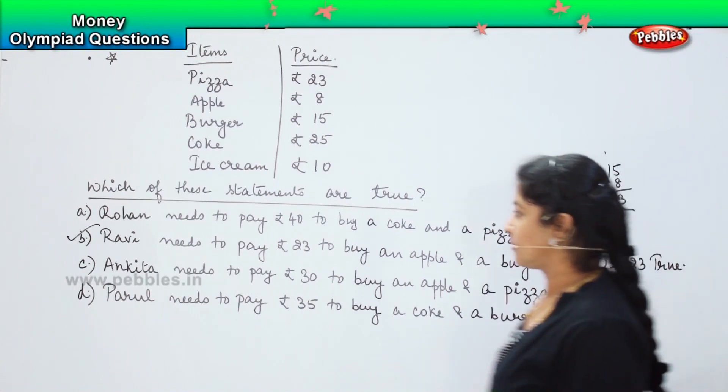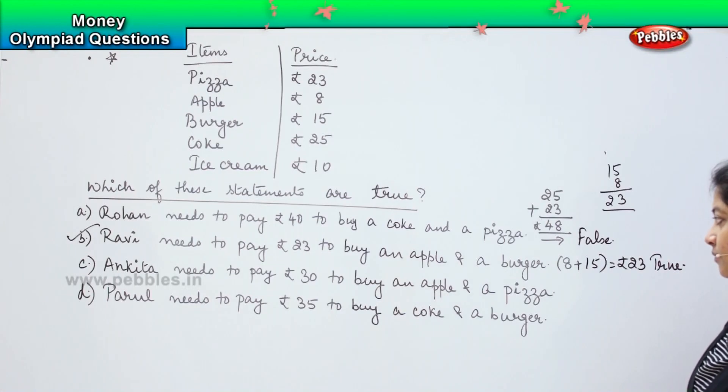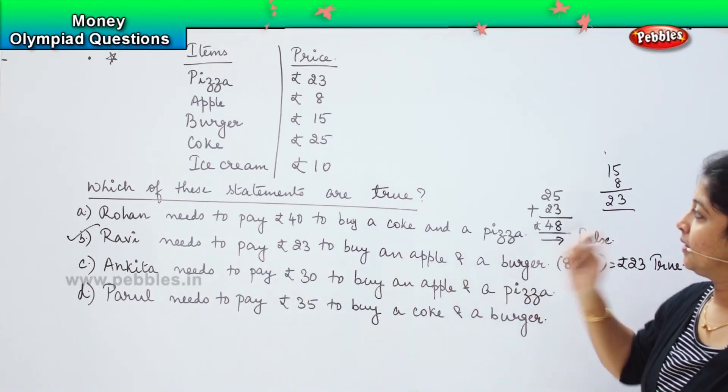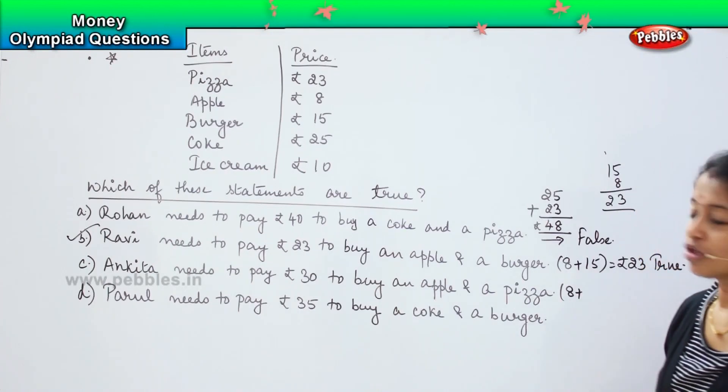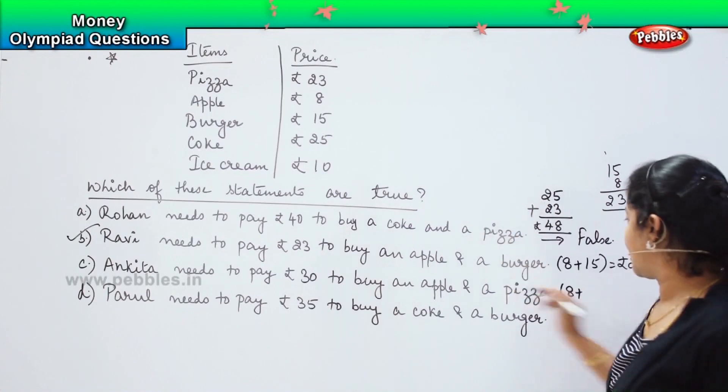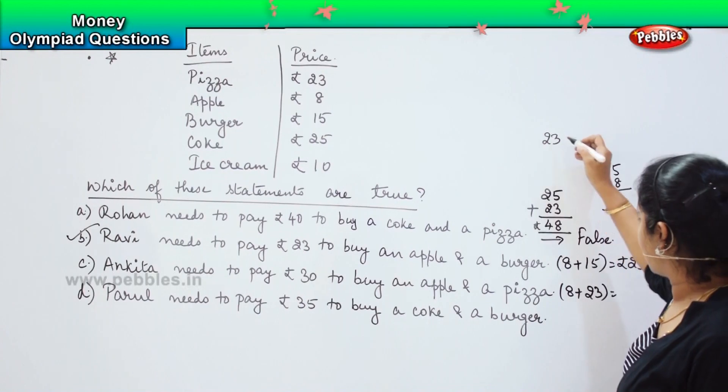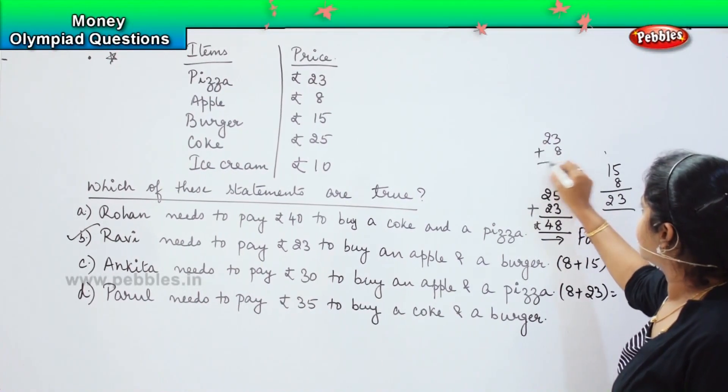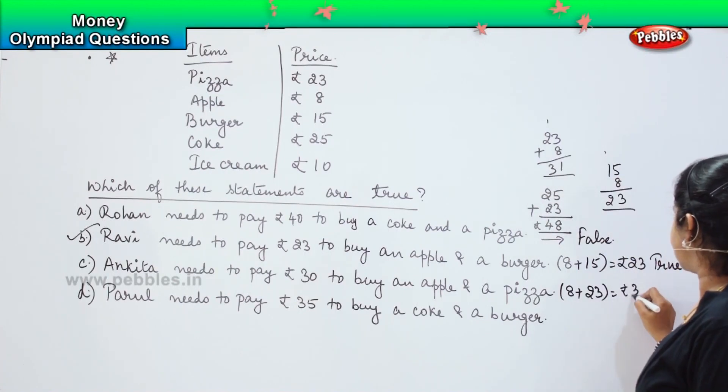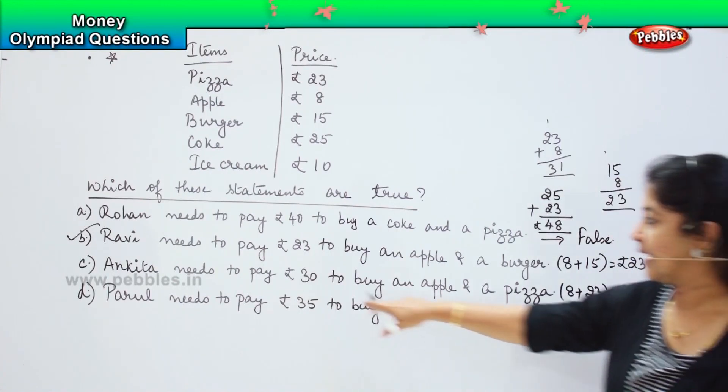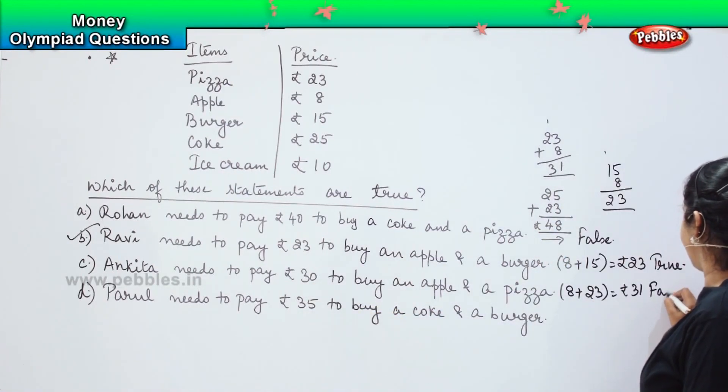Coming to the third one. Ankita needs to pay 30 rupees to buy an apple and a pizza. So, the cost of an apple is rupees 8. And what is the cost of the pizza? Cost of a pizza is 23, right. So, let us add here 23 plus 8. 3 plus 8 is 11, 1 plus 2 is 3. So, which means that it costs me rupees 31. And here they are asking that she pays 30 rupees. So, again, this is a false statement.